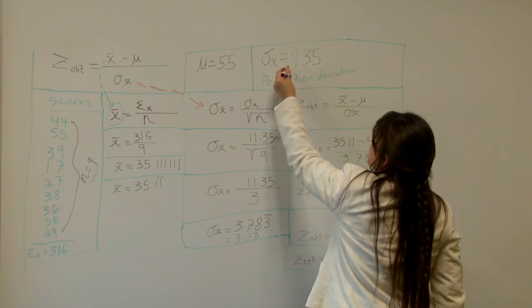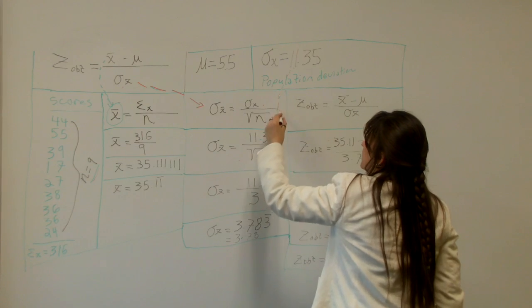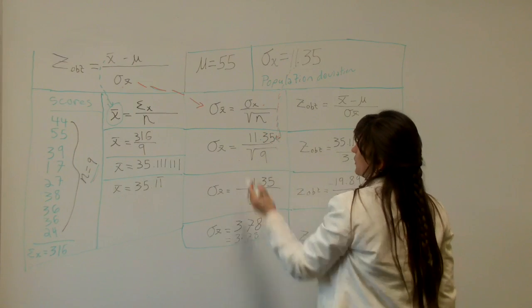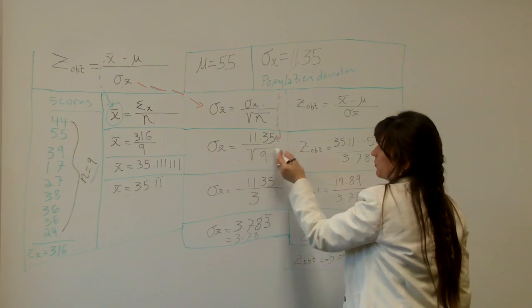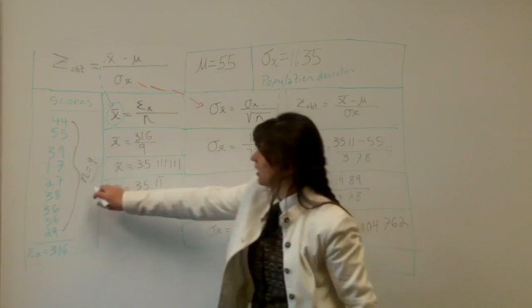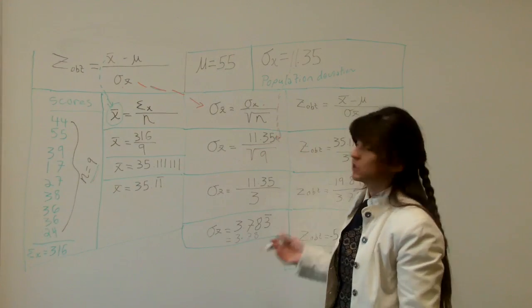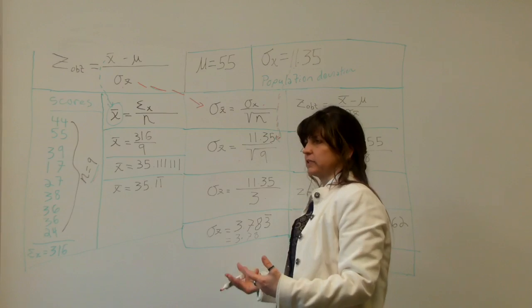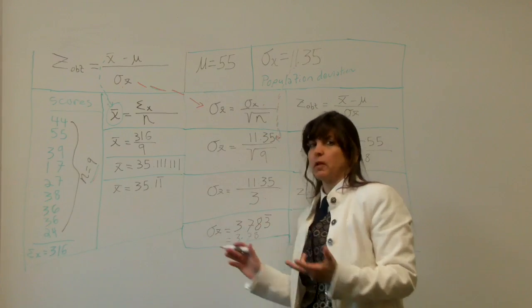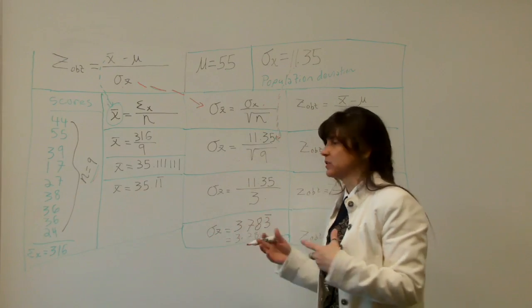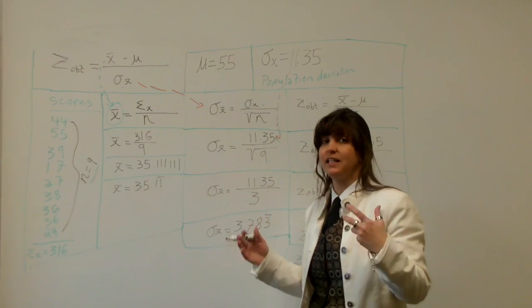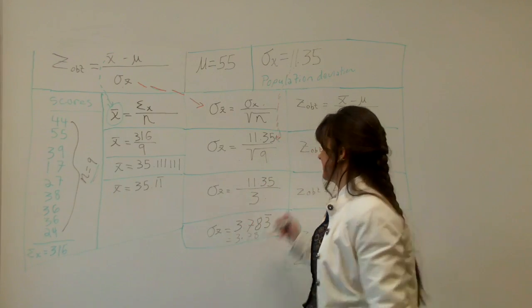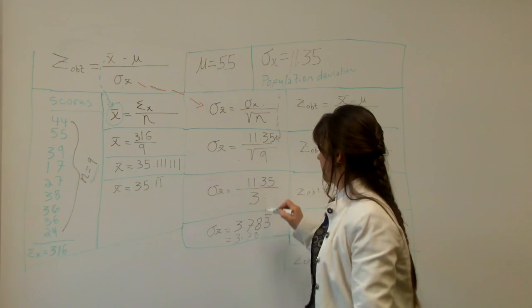So 11.35 is going to come down here. 11.35 divided by square root of N, right there, which is 9. What's the square root? Remember, square root is what number multiplied by itself equals that number. So this one's kind of easy, 3 times 3 equals 9. So that becomes 3.